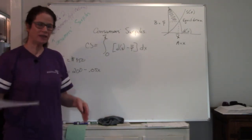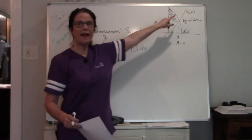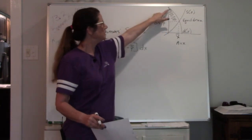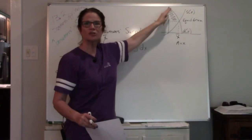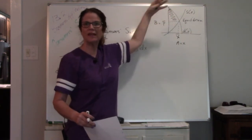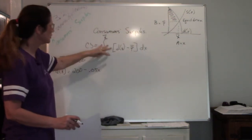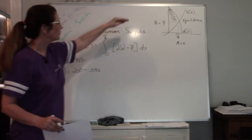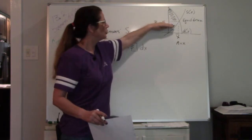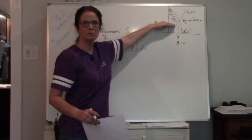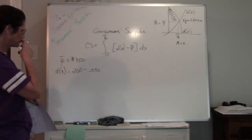If you don't remember what consumer surplus is — it's the happy place where a consumer is willing to pay more for something but only has to pay the market price. This is their happy area, what they've saved because they're willing to pay more but don't have to. It's just the area between two curves: the upper curve is your demand function and the lower curve is your market price.